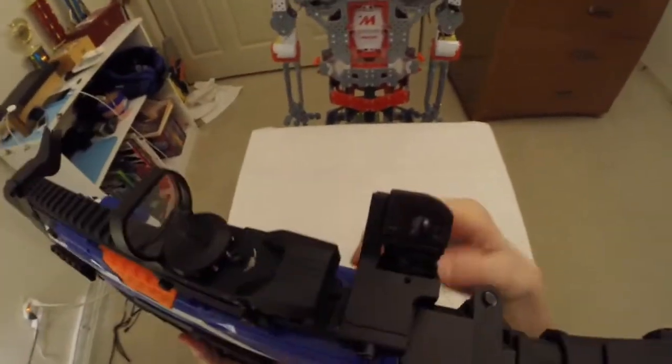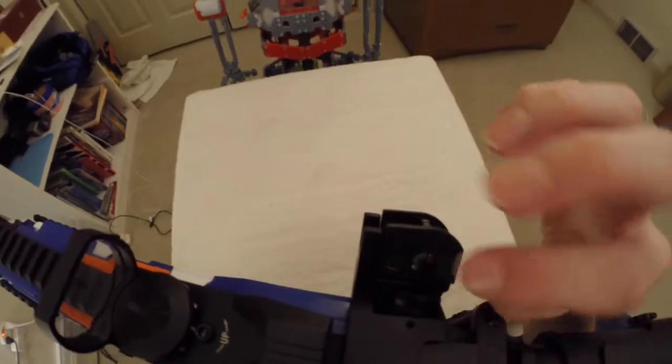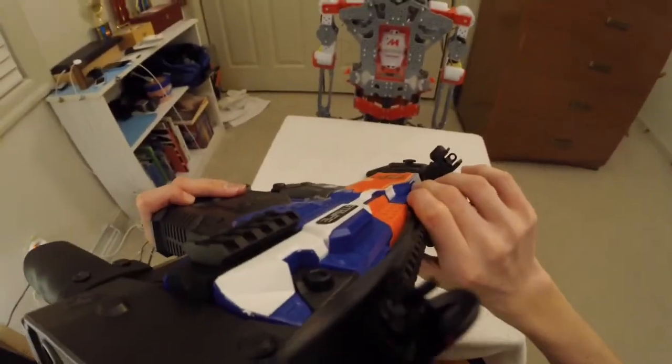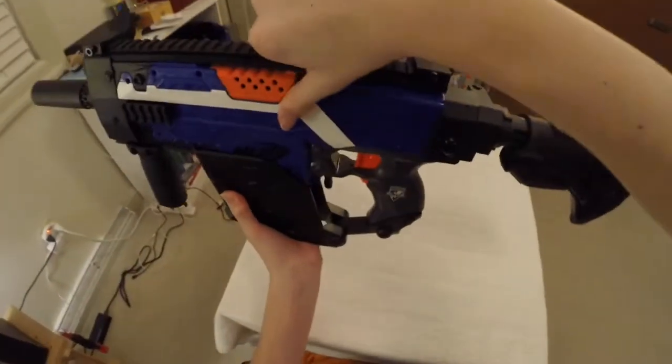With this, this little knob here can make this thing go up and down. This thing goes, that little thing goes over there. Continuing on right here, this is just a little iron sight thing. That's it.